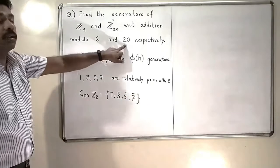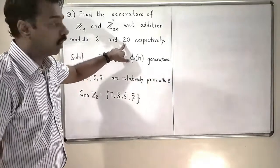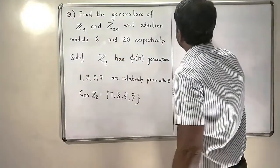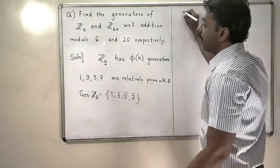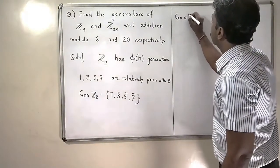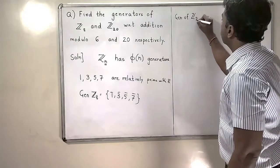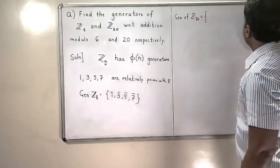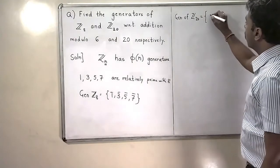Using the same logic, I am going to write the generators of Z20. What are the numbers that are relatively primed to 20? I am going to write them directly now.